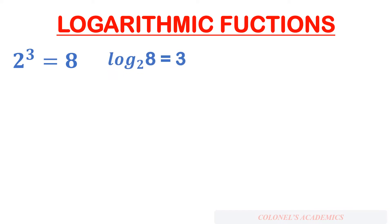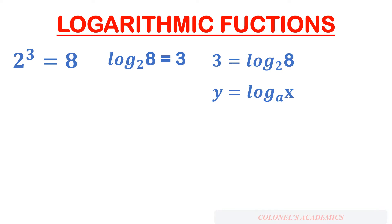Now let us see how we can formally write the logarithmic function. Log a to the base 2 is 3, so we can write 3 is equal to log a to the base 2. Converting this into the form of x and y, this equation can be written as y is equal to log x to the base a. Here, x should always be greater than 0, the base has to be greater than 0, and the base cannot be equal to 1. These are the 3 conditions for a logarithmic function.